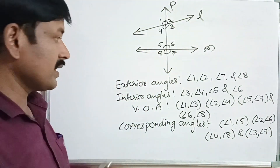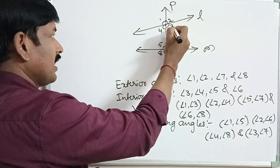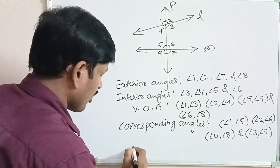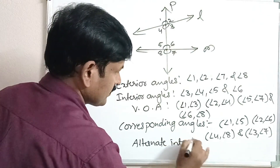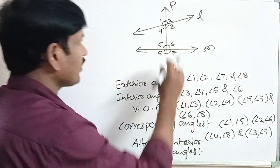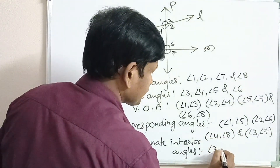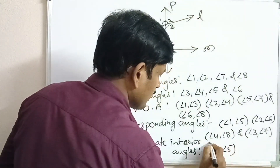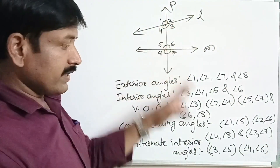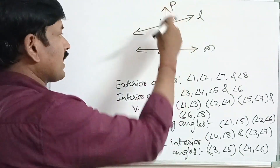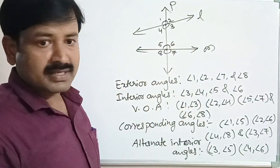Next, alternate interior angles: angle 3 and angle 5, angle 4 and angle 6 are the pairs of alternate interior angles. Similarly, angle 1 and angle 7, angle 2 and angle 8 are the pairs of alternate exterior angles. These are the pairs of angles formed when a transversal cuts two lines at distinct points.